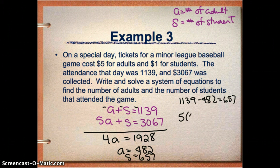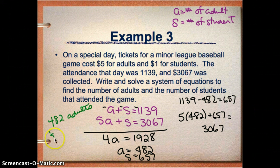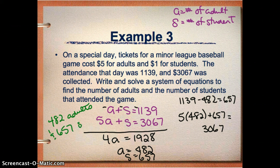And now I just want to double check that I'm right here. So I want to know if five times my adult tickets, so five times 482 plus 657, I want to make sure that's really 3,067 and make sure I didn't make any mistakes. And I'm just checking on my calculator right now and I do get 3,067. So that looks good.